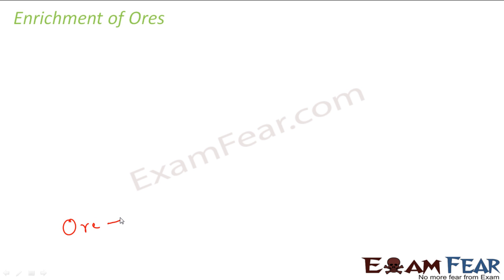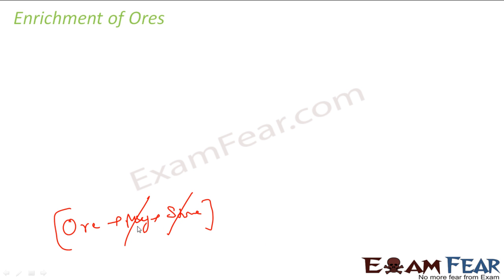Enrichment of Ores. So what is this? Generally the ore which we get has mud, stones, and a lot of other stuff. So before we start the chemical reaction process on this, it is good to remove this mud and stone. This can be removed without any chemical process. So you remove the mud, you remove the stone, and your ore is enriched — it has more ore content. And this is what is called enrichment of ores.